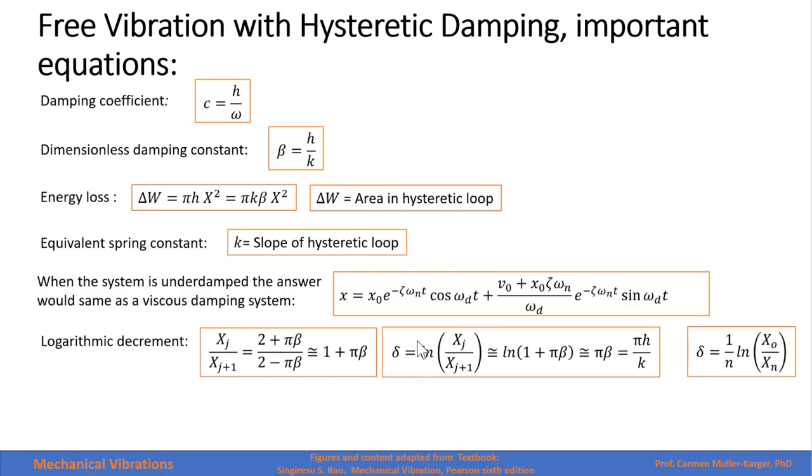The ratio between two consecutive amplitudes can be written in this form. The logarithmic decrement now is the logarithm of this ratio, and it can be approximated to the logarithm of 1 plus πβ, and that's approximated to πβ, which is πh over k.